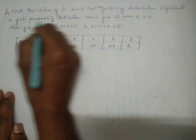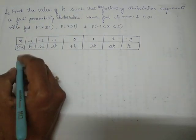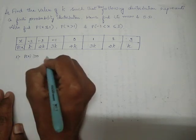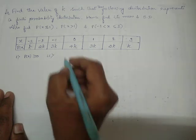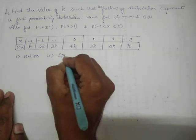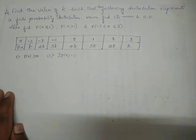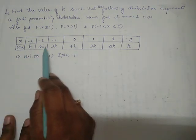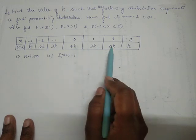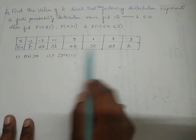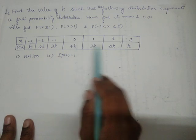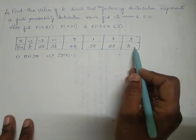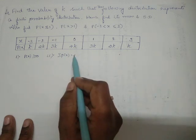The two conditions for a finite probability distribution are: first, P(X) must be greater than or equal to zero, and second, the summation of P(X) must be equal to one. Each and every value of P(X) must be positive — it must not be a negative value. After adding all these values, we must get one.